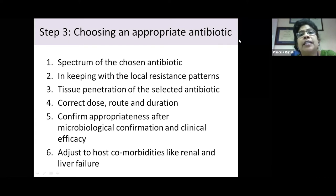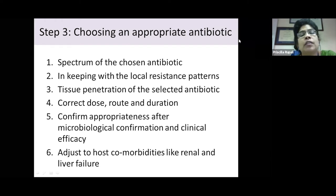When choosing an antibiotic, ensure the spectrum covers all likely organisms for the particular infection, that it aligns with local resistance patterns, and that it penetrates the target tissue — whether bladder, kidney, blood, or lung. Give the correct dose, correct route, and correct duration. After microbiological confirmation, ensure clinical efficacy and adjust for host comorbidities such as liver or renal failure.